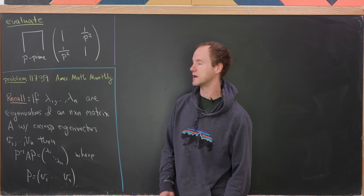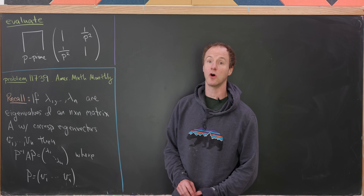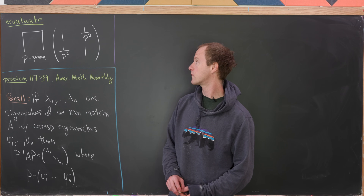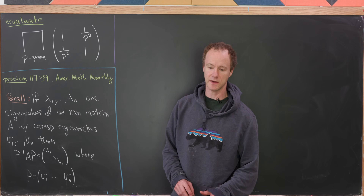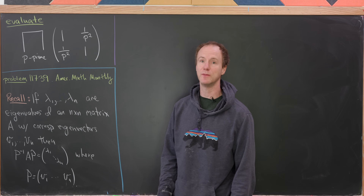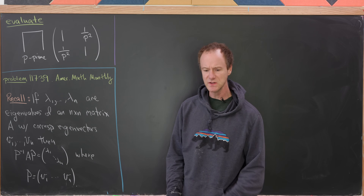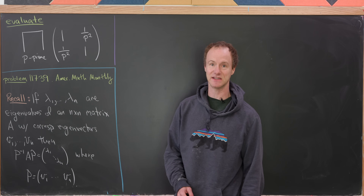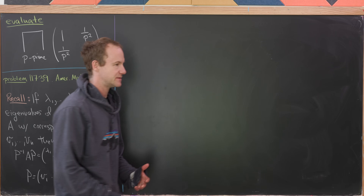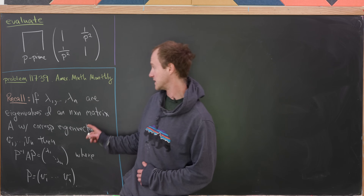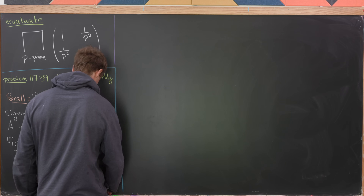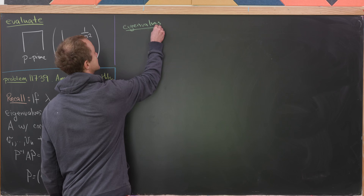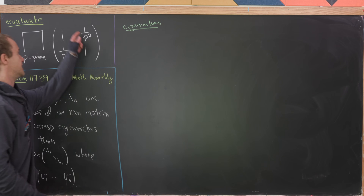Our goal is to find the product over all primes of the matrices with entries 1, 1/p², 1/p², and 1 — a nice product of 2-by-2 matrices. Since we talked about diagonalization already, we'd like to diagonalize this matrix. To do that, we need to find the eigenvalues and eigenvectors, so we first look at the characteristic polynomial.